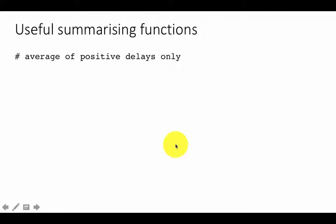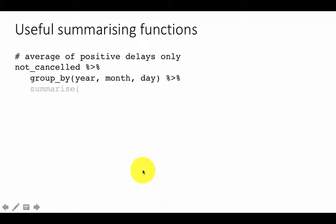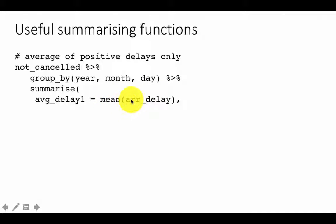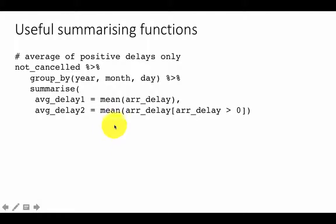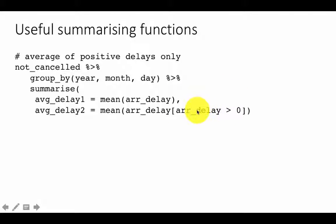There are many functions you can use while summarizing. For example, if you want to average only the positive delays — leaving out negative delays for flights that arrived early — you can do this: take the not-cancelled table, group by year, month, and day, then in the summary compute average_delay_1 as the mean of arrival delay, and average_delay_2 as the mean of arrival delay where arrival delay is greater than zero. So for the mean computation, it only considers positive arrival delay values.